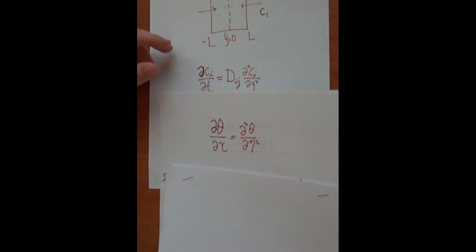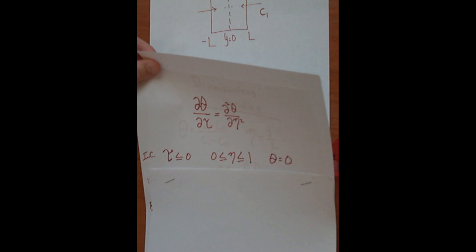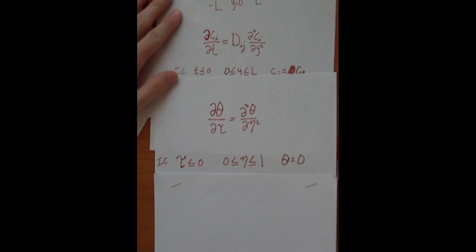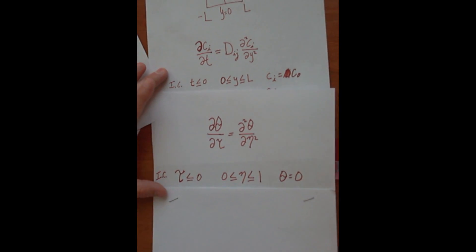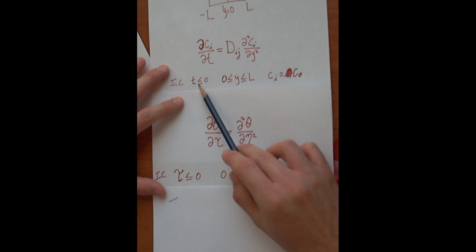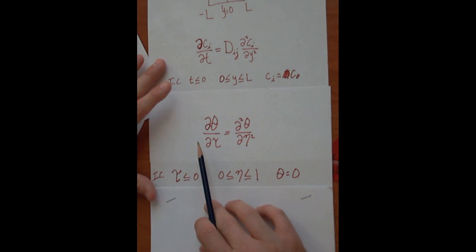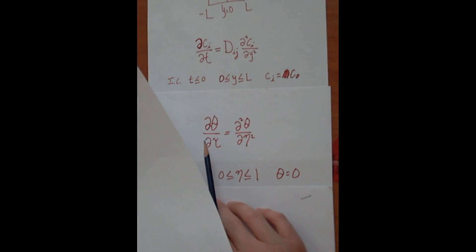The initial conditions and the boundary conditions, so if we first take a look at the first initial condition, if T is less than or equal to zero, tau will always be less than or equal to zero. Because again,